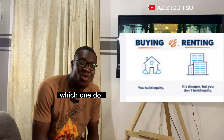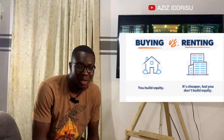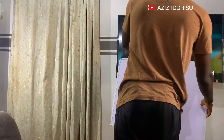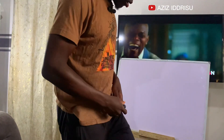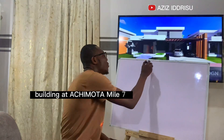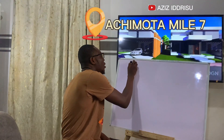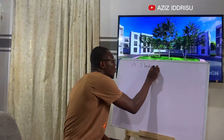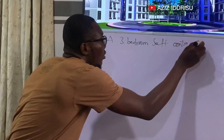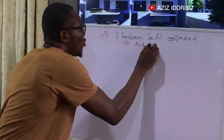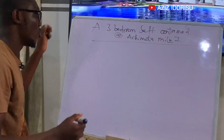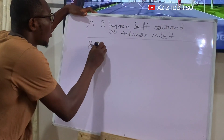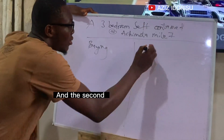So buying or renting a house — which one do you think is more economical? Let's go to the board and do some calculations. We'll take a building at Achimota Mile 7 — a three-bedroom self-contained. The first point to check is buying and the second is renting.